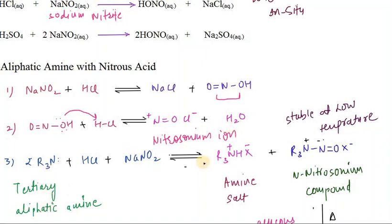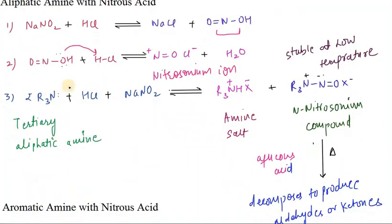As we know, we have tertiary aliphatic amine which is basic in nature, and nitrosonium ion is the acidic part. In the case of tertiary amine, we will be using two moles of tertiary aliphatic amine, in which one mole will convert into amine salt and another mole will convert into N-nitrosonium compound.